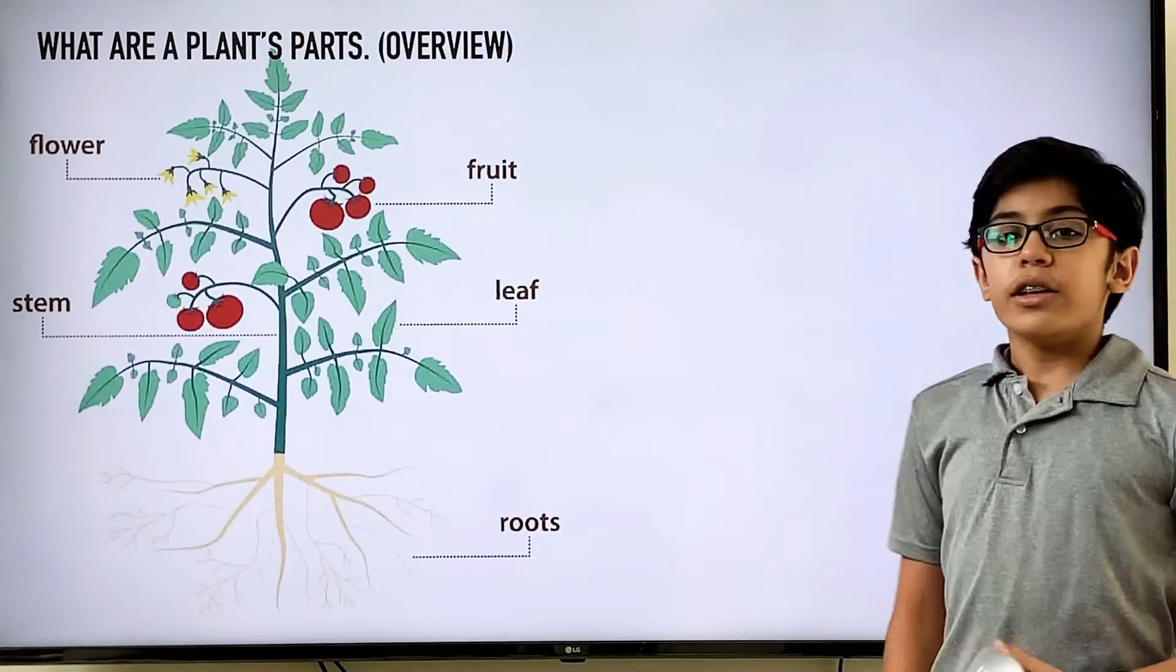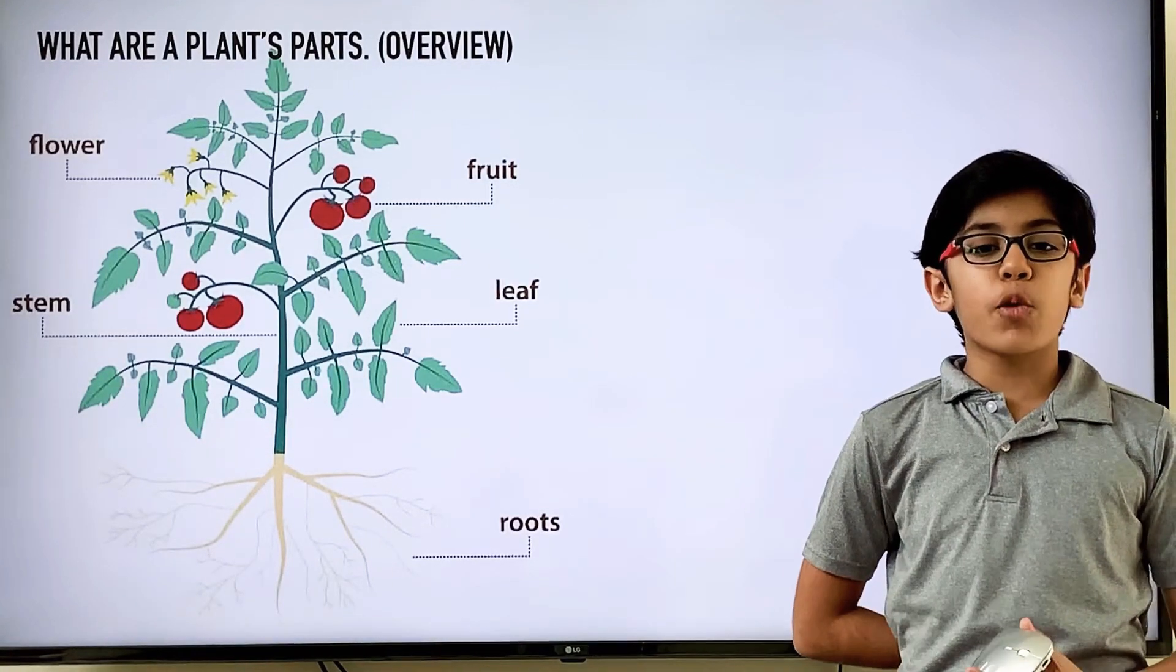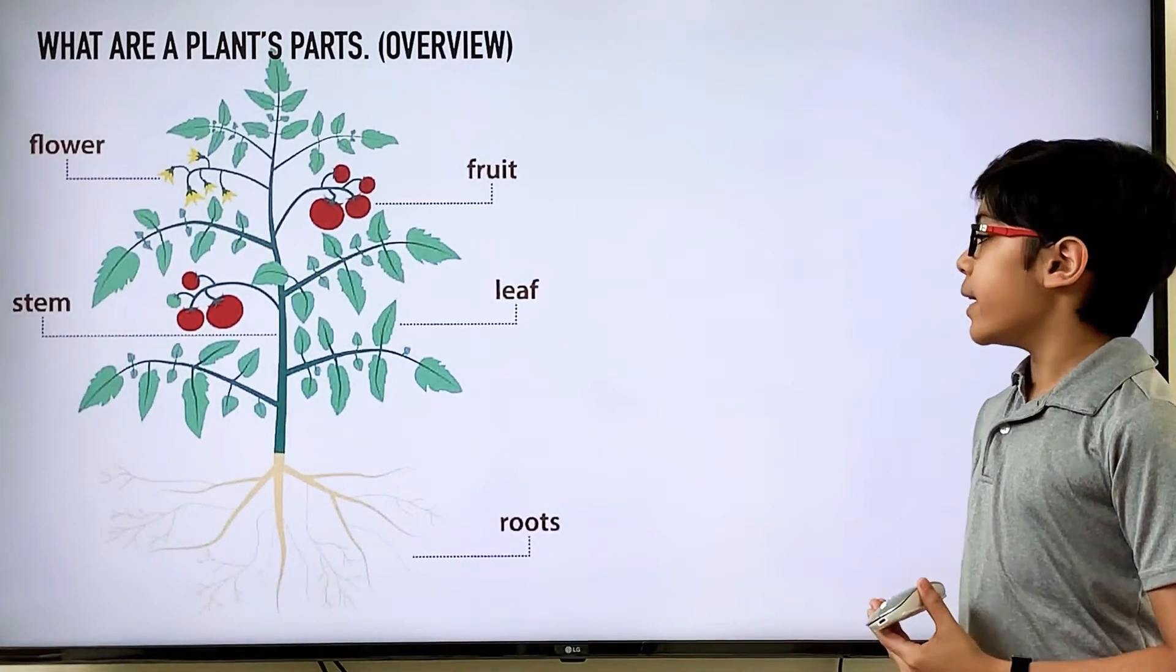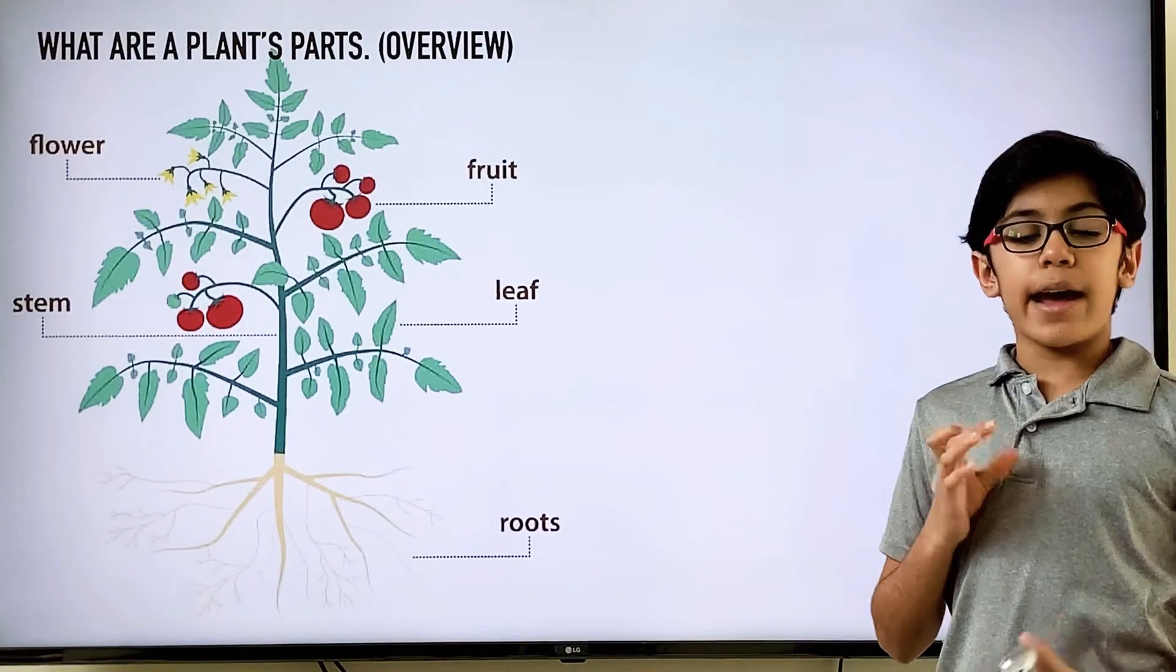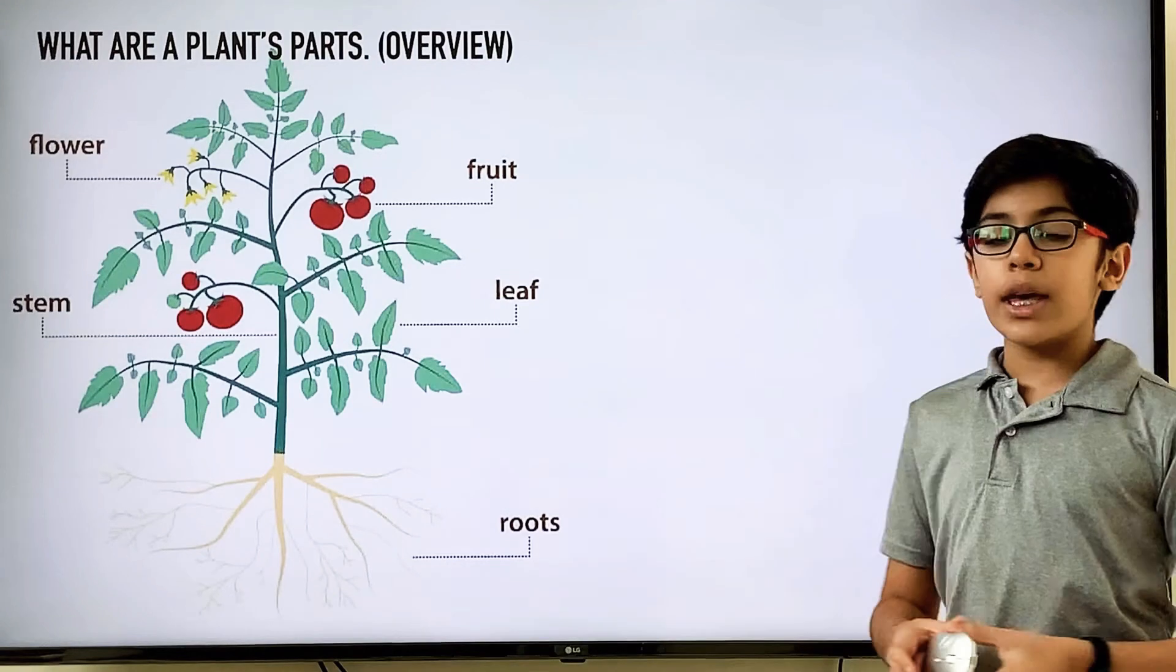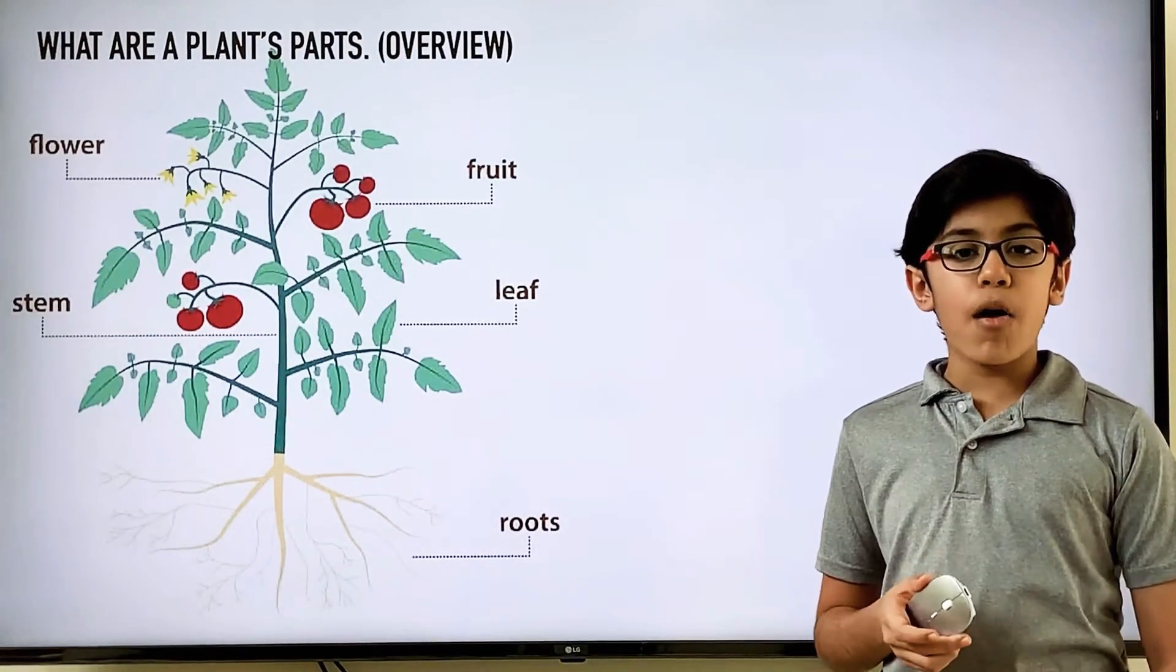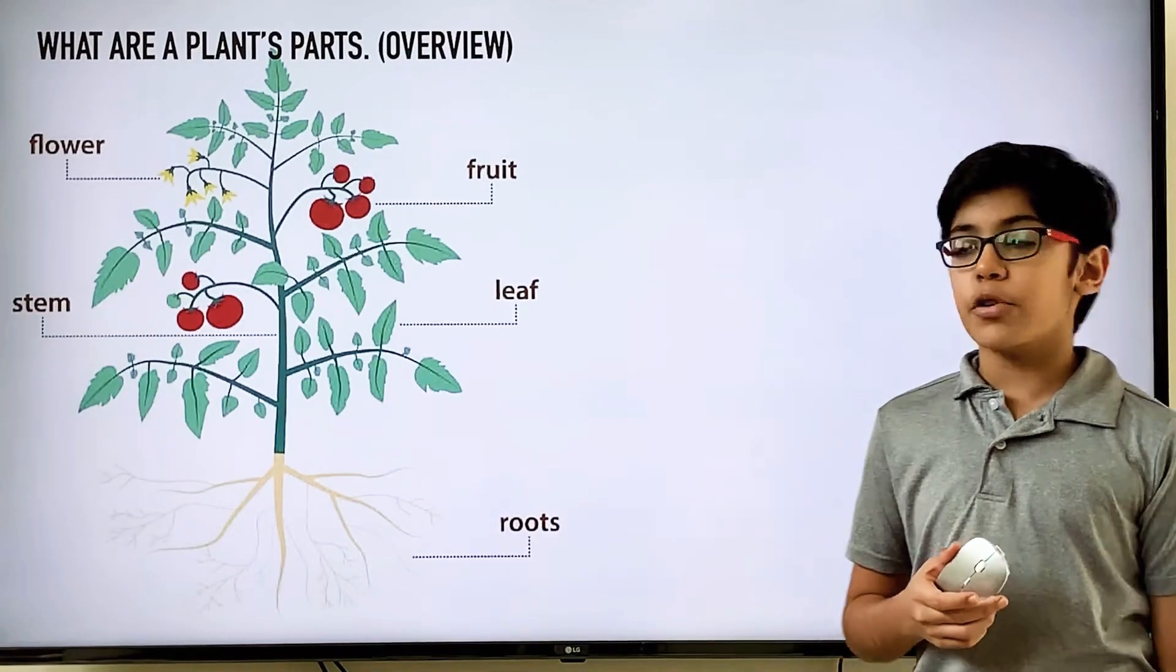The stem serves as a support system for the plant. It kind of works like the human spine. It works as a way that food can go up to down or down to up. And it also keeps the plant standing upright. Now flowers are used to attract pollinators that allow the plant to reproduce.